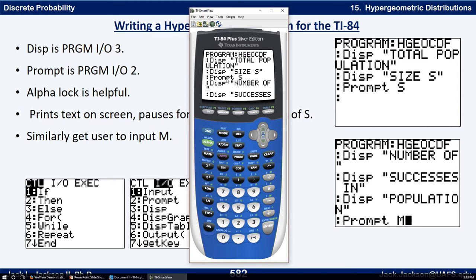And then I want, it wouldn't all fit on one line, so I want another display size S. So it's telling you the S is going to represent the size of the population. Again, usually we let that be capital letter N. But here we're going to use N for the sample size. So we need a different letter.